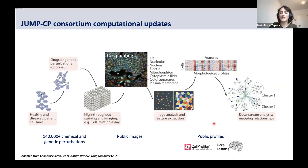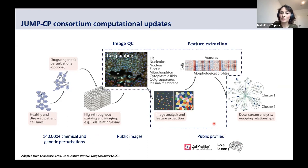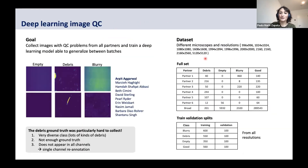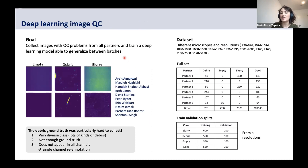In this first year of the current consortium, while the data was being produced, we focused on the computational aspects — specifically developing methods for image quality control and feature extraction. We thought this consortium offered a perfect setup to collect a very diverse set of images with quality control problems, and hopefully use this dataset to train a very generalizable deep learning model to classify image QC.